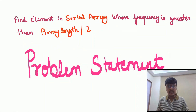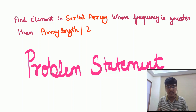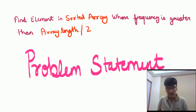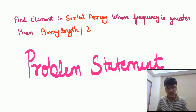Hello everyone. In this web series we will be talking about a competitive programming question based on the programming paradigm of divide and conquer. The question is: we have to find an element in a sorted array such that that element should have a frequency greater than half of the size of the array length. We need to break the problem statement into subcategories so that we can analyze it in a much better sense.